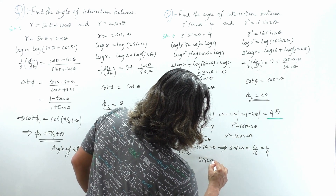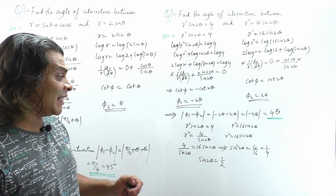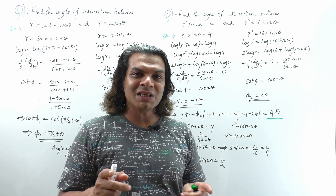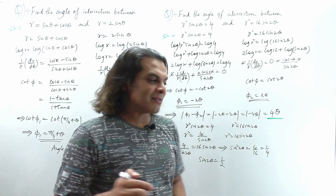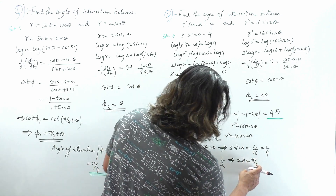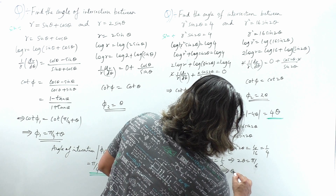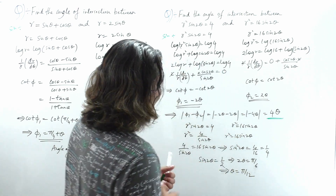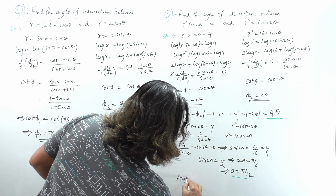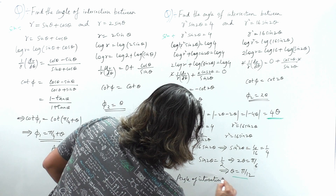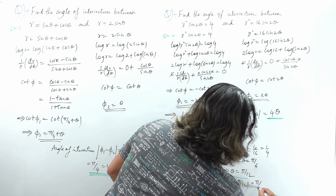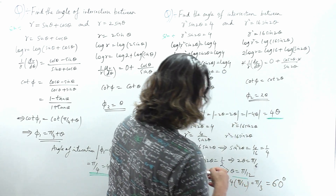For what value of θ does sin equal 1/2? sin⁻¹(1/2) = 30 degrees, since sin30° is always 1/2. So 2θ = 30° = π/6, which means θ = π/12. Therefore the exact angle of intersection is 4 × π/12 = 4π/12 = π/3, which is 60 degrees. That's the exact answer.